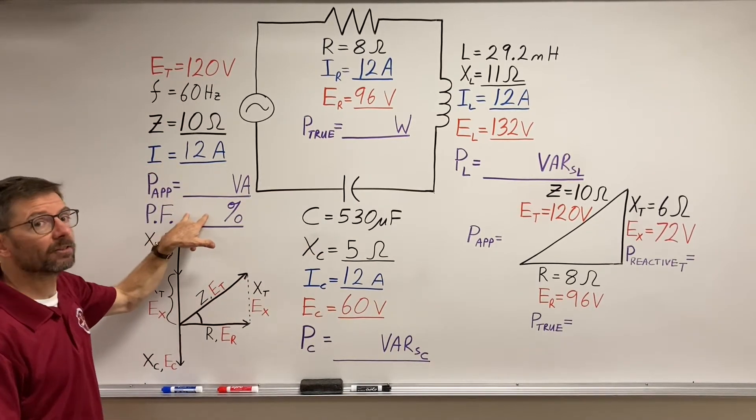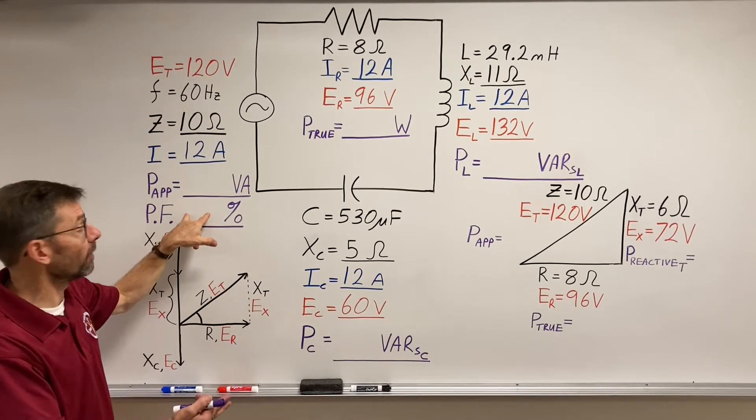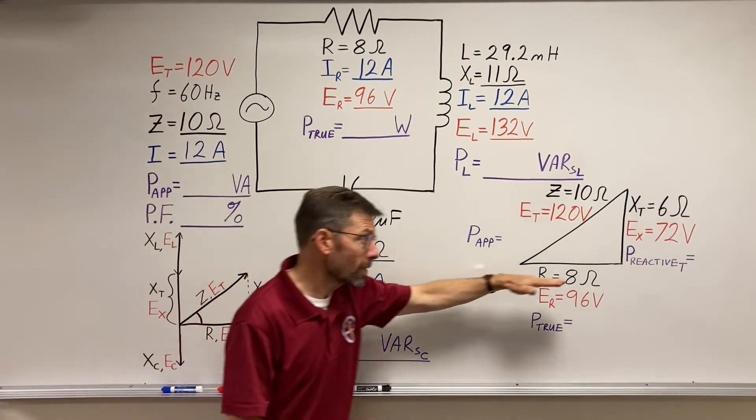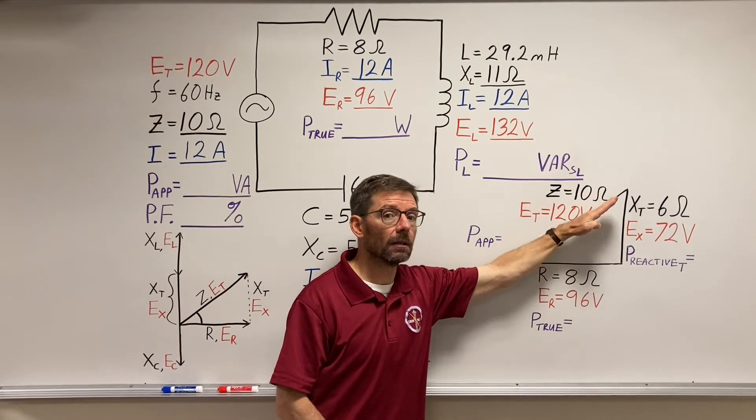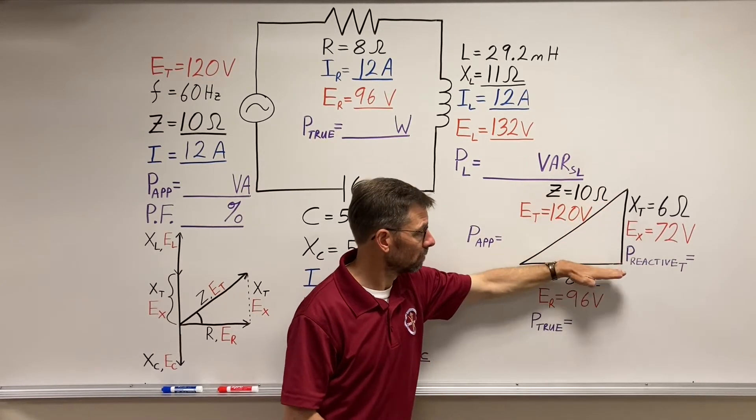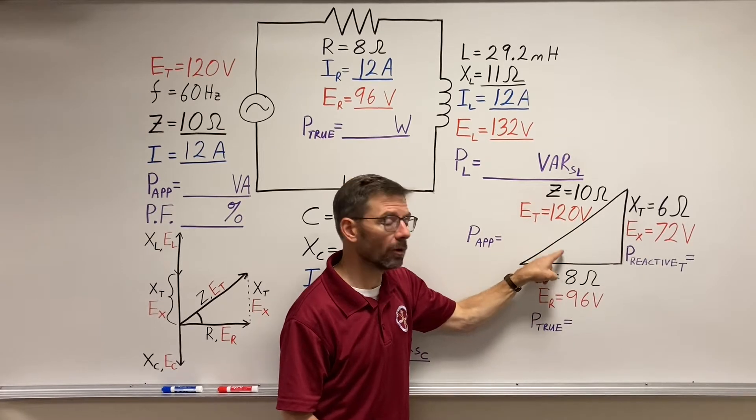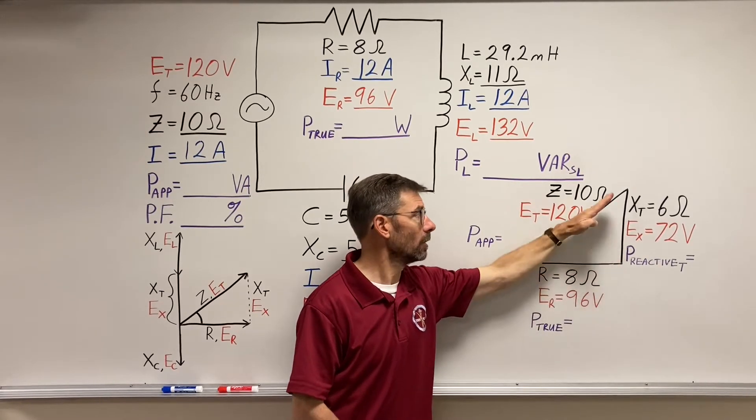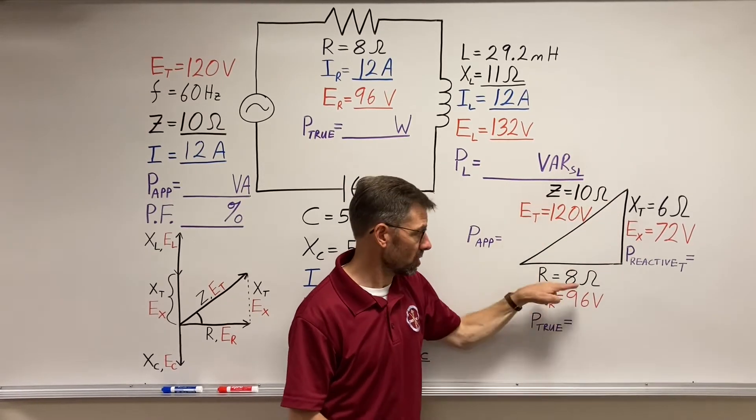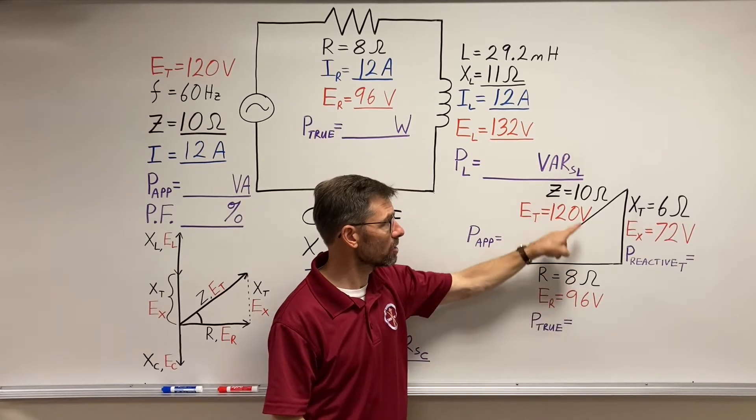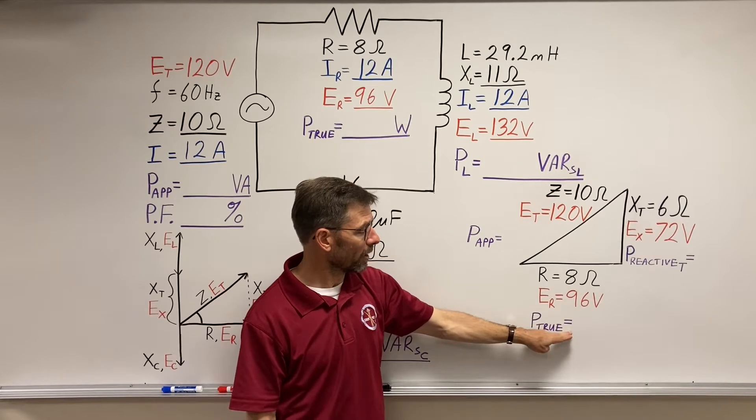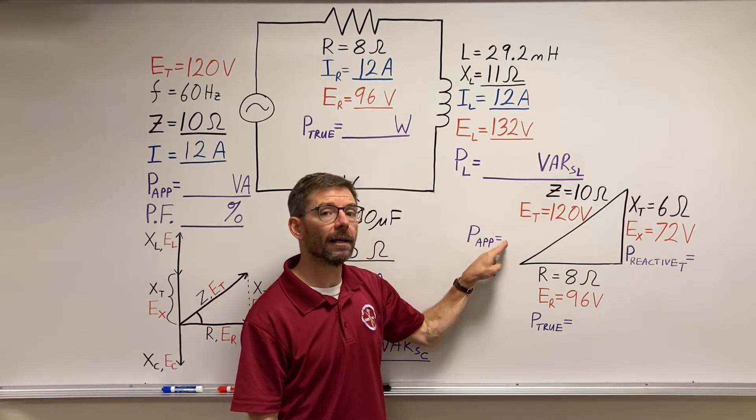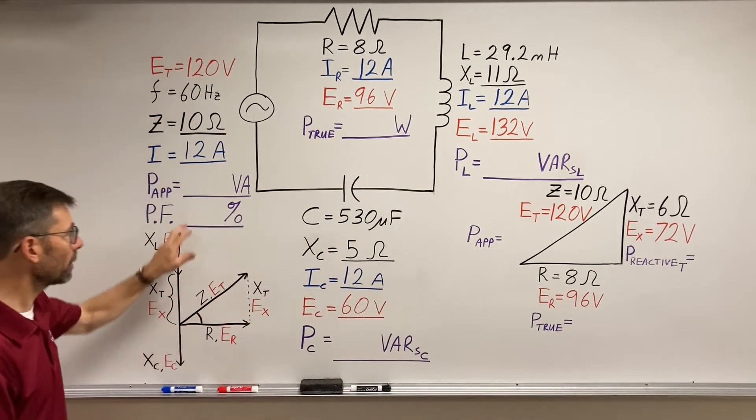We'll deal with power factor at the end, even though we could solve that now. Remember, any resistive value over its corresponding total circuit value, cosine of the angle theta, adjacent side over hypotenuse, corresponding values. 8 ohms over 10, 96 volts over 120, whatever my true power is over my apparent power. That'd be my power factor.